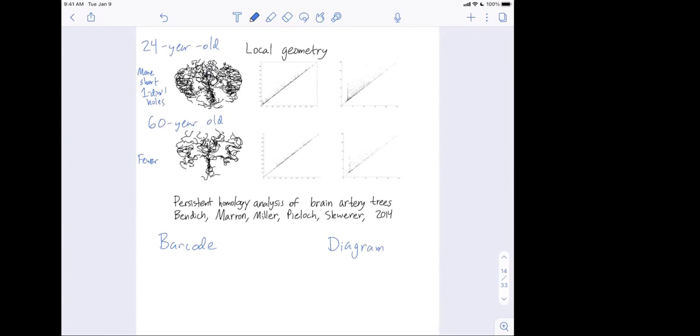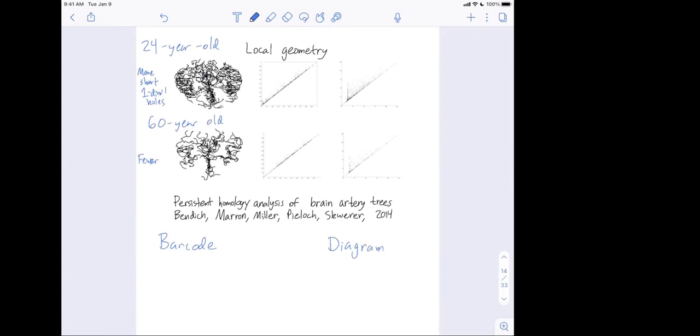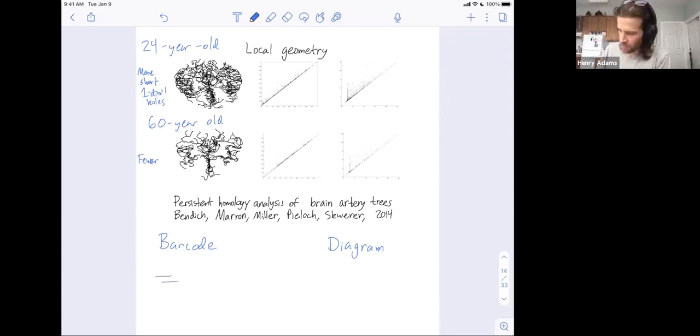Okay, so in a barcode, I might have one-dimensional homology, and I might have a couple bars. And these bars each have various birth times, and they each have various death times. So let's call this birth one and death one, because it's corresponding to the birth of the first bar and the death of the first bar.